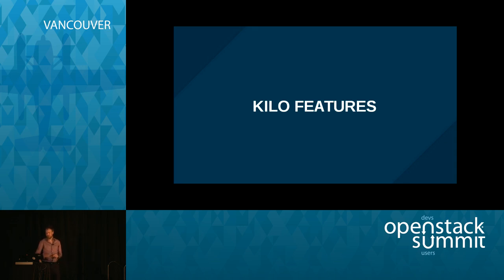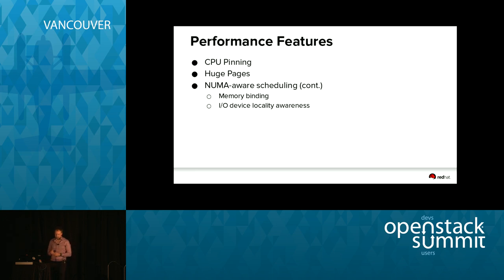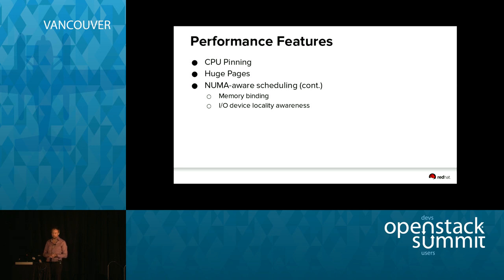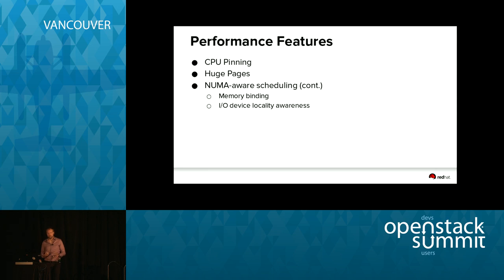Moving into the Kilo features section — I mentioned I'll be primarily focusing on performance features. Some of this started in Juno; NUMA-aware scheduling for example started there, but I'd position the Kilo versions as the first kind of usable baseline where you can combine all these things together and have them play relatively nicely. We have the ability to pin virtual CPU cores to physical CPU cores, the ability to back guest memory with huge pages, NUMA-aware scheduling extended to cover memory binding and IO device locality awareness, and general cleanup of bugs in that area.